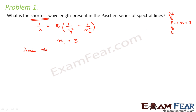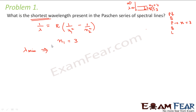The wavelength would be minimum when the transition takes place from the energy level which is farthest away. If the transition takes place from n₁ equal to 1, then the wavelength is maximum. Now if the transition takes place from infinity, then the wavelength would be minimum. So lambda would be minimum when n₂ is equal to infinity.